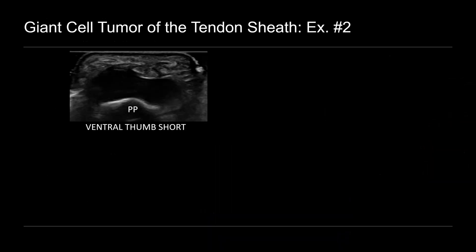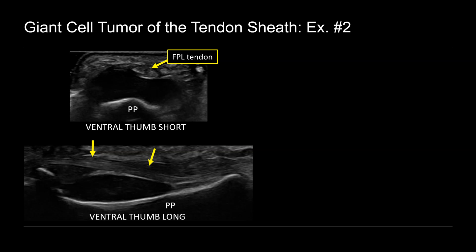Let's look at another example of a giant cell tumor of the tendon sheath. This patient also presented with a ventral thumb mass. This one is a bit more distal, still overlying the proximal phalanx, but notice it's insinuated deep to the flexor pollicis longus tendon. When we turn on long axis, you can see that relationship a bit better. There's the tendon, there's the underlying mass there between the tendon and the proximal phalanx.